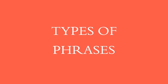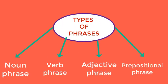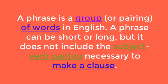In this part, we work on phrases — the meaning of that and types of phrases. Types of phrases: number one, noun phrase; number two, verb phrase; number three, adjective phrase; number four, prepositional phrase. A phrase is a group or pairing of words in English. A phrase can be short or long, but it does not include the subject-verb pairing necessary to make a clause.